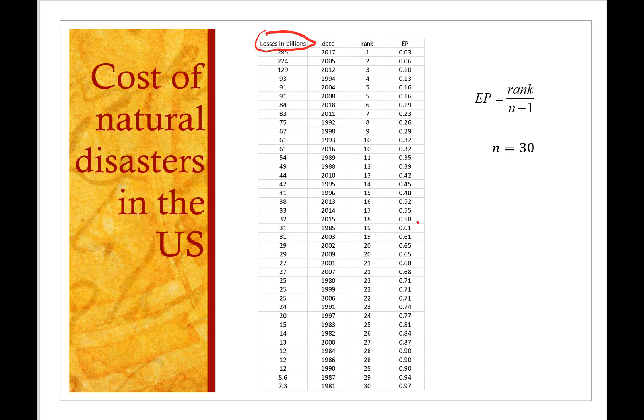Now you'll notice that I have some duplication in here. I have several disasters that cost the same amount. So the total number of different observations that I have in this case are 30. It's not the total count of observations, just the total number of different ones that I have. I take 30 plus 1. I divide the rank by 31 and that gives me an exceedance probability.